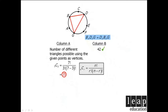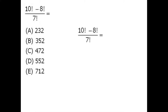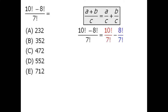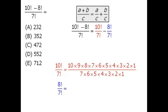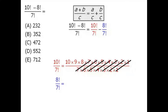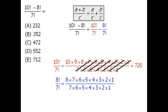Using the rule that a fraction can be broken into two fractions, we evaluate each part individually. For the first fraction, 10 factorial divided by 7 factorial: the shared terms cancel, leaving 10 times 9 times 8, which equals 720. For the second fraction, 8 factorial divided by 7 factorial: the shared terms cancel, leaving 8. So our overall expression equals 720 minus 8, which equals 712. Our answer is E.